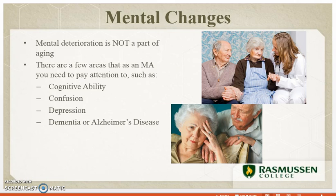There are also mental changes that a patient will go through with aging. Mental deterioration is not a normal part of aging, contrary to what people believe. Everyone assumes that when you get older you lose your memory, but that's not what is supposed to happen. Mental health is the ability to cope effectively with life changes, manage life stresses, and achieve a state of emotional balance. Individuals must partake in interesting activities and engage in regular social interactions; otherwise they are more likely to have mental health conditions later in life.